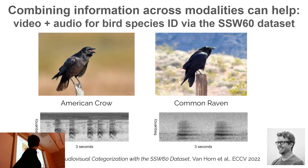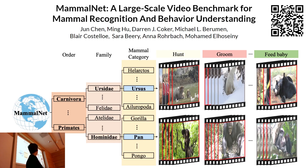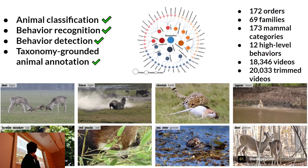For example, American crows and common ravens look very similar visually, but in the audio space their calls are very different. So should we be using the right data sensor for classification, or combining across sensors? There's a great dataset for exploring audio-visual categorization put up by Grant Van Horn. Similarly, we can expand beyond species classification to understand things like behavior. There's been an effort led by Jun Chen at KAUST to build datasets of mammal videos with tasks including classification, behavior recognition, behavior detection, and taxonomy-grounded animal annotation — categories defined based on ecological importance.